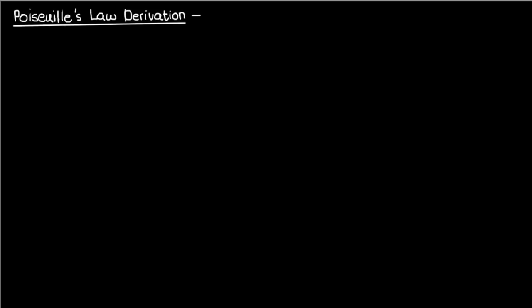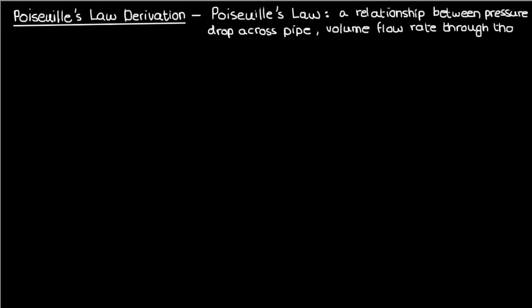Greetings students and welcome back to my fluid mechanics playlist. In this video I'm going to derive Poiseuille's Law, which is essentially a relationship between the pressure drop across a pipe, the volume flow rate through the pipe, and the radius of that pipe.